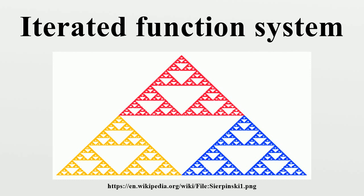Formally, an iterated function system is a finite set of contraction mappings on a complete metric space. Symbolically, it is an iterated function system if each function is a contraction on the complete metric space.